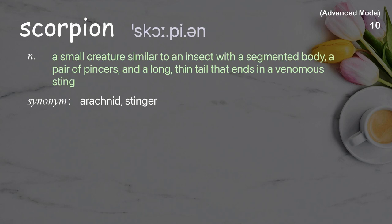Scorpion: a small creature similar to an insect with a segmented body, a pair of pincers, and a long, thin tail that ends in a venomous sting.